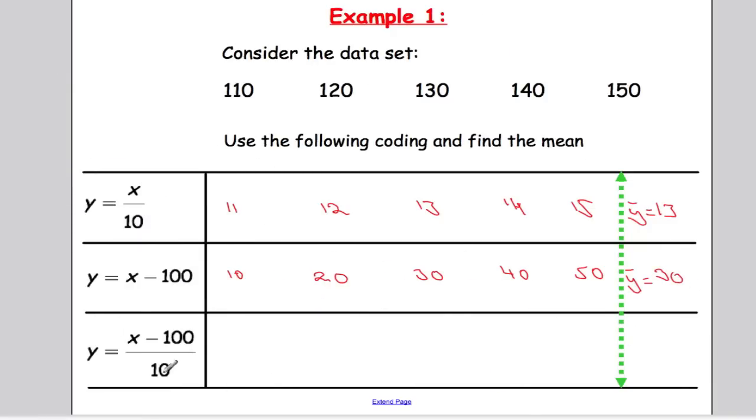And the final one here, it's going to be the value of x take away 100, and then divide that by 10. So 110 take away 100 is 10, and 10 divided by 10 is 1. Hopefully you notice that it's actually just all of these values divided by 10. So we get 2, 3, 4, and 5. And when we work out y bar, we're going to get 3. That's how you code a data set, just substitute the values into the code to get a new value.